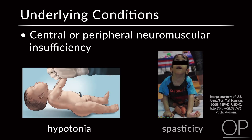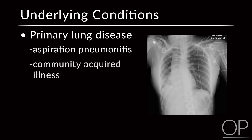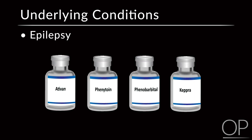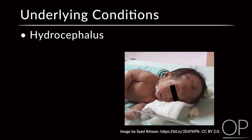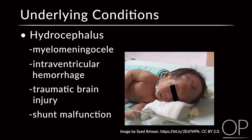Do they have hypotonia or spasticity — mixed or inconsistent? Do they have primary lung disease from cumulative insults with aspiration pneumonitis, community-acquired illnesses, or immunosuppression making them prone to respiratory illness? Could they have epilepsy? Are they seizing, post-ictal, hyperventilating, or hypoventilating? Have they received antiepileptics that are now sedating them? Do they have hydrocephalus from myelomeningocele, intraventricular hemorrhage, or traumatic brain injury? Could a shunt malfunction be causing obtunded or depressed mental and respiratory status?